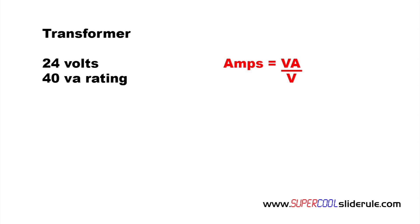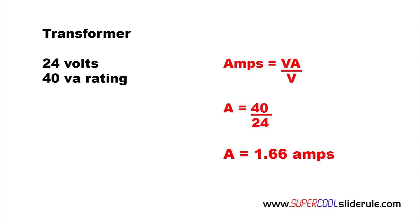A VA rating of 40 is converted to amps by dividing the VA rating by the voltage output, as seen here. In this example we will divide 40 by 24. This gives us 1.66 amps. So this transformer will deliver a maximum of 1.66 amps at the rated output of 24 volts.